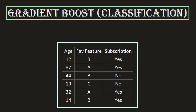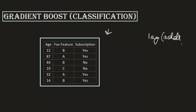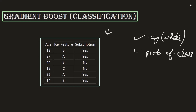In the previous lecture, when working with a regression problem, the first step was for the base learning model to create an initial prediction column with the same value for all records — the average of the target column, which was a continuous variable. However, this time the target column is a categorical variable with values only yes and no, so we need a different approach. To make the initial prediction, we will calculate something called log odds and then convert that into the probability of the class.